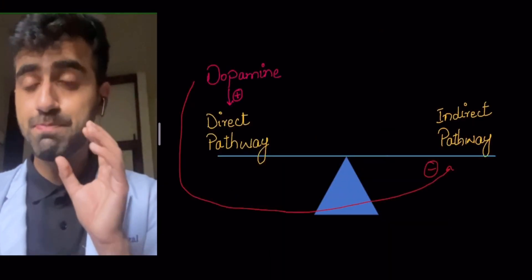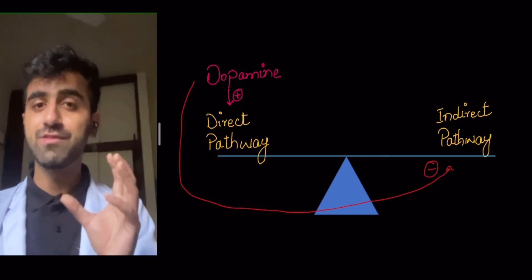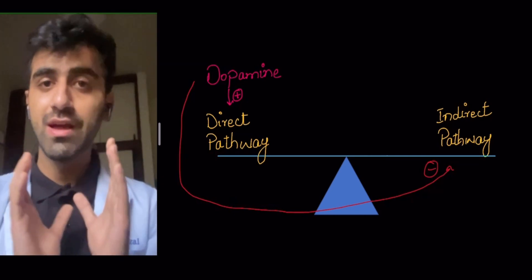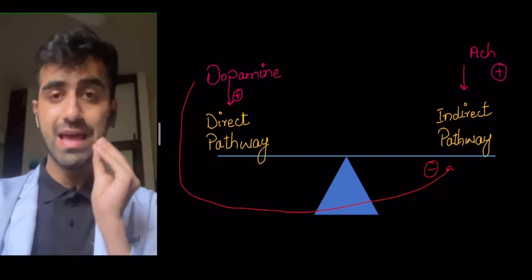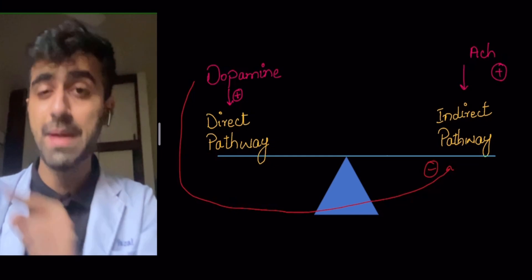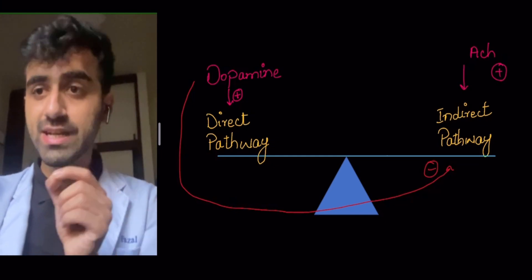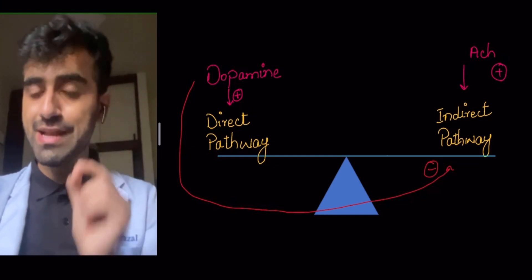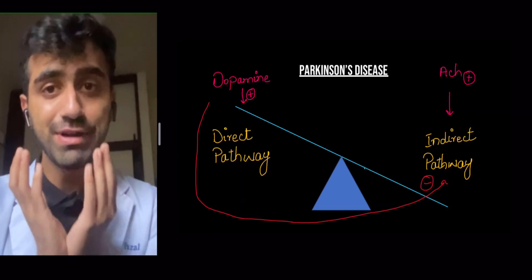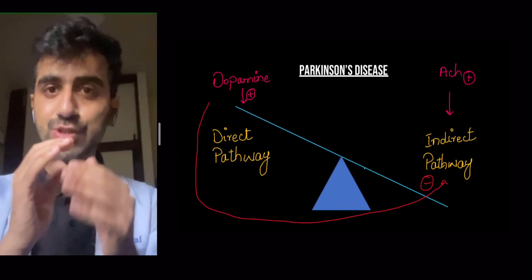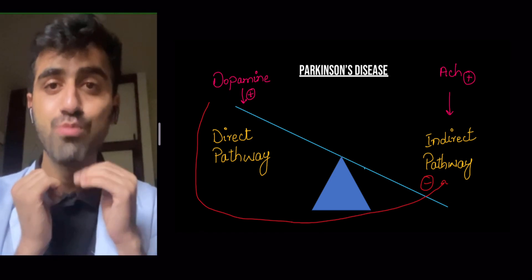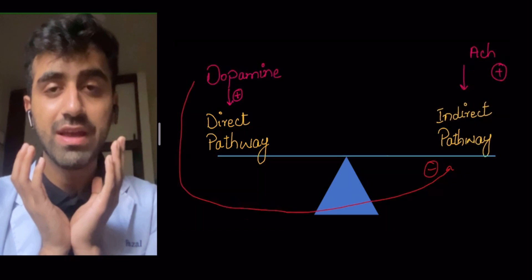There's a balance in your body between the direct and indirect pathway, and both are affected by dopamine and acetylcholine. Dopamine stimulates the direct pathway and inhibits the indirect pathway, whereas acetylcholine stimulates the indirect pathway. In Parkinson's, dopamine is decreased, creating an imbalance where the indirect pathway acts more, resulting in symptoms like rigidity.